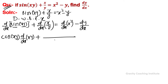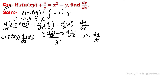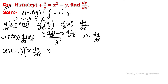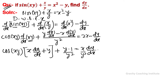Using chain rule on cos(xy), and by product rule on x/y: y into differentiation of x minus x into differentiation of y, all over y², equal to 2x. Using product rule, we get x dy/dx plus y plus (y·1 - x·dy/dx) / y².